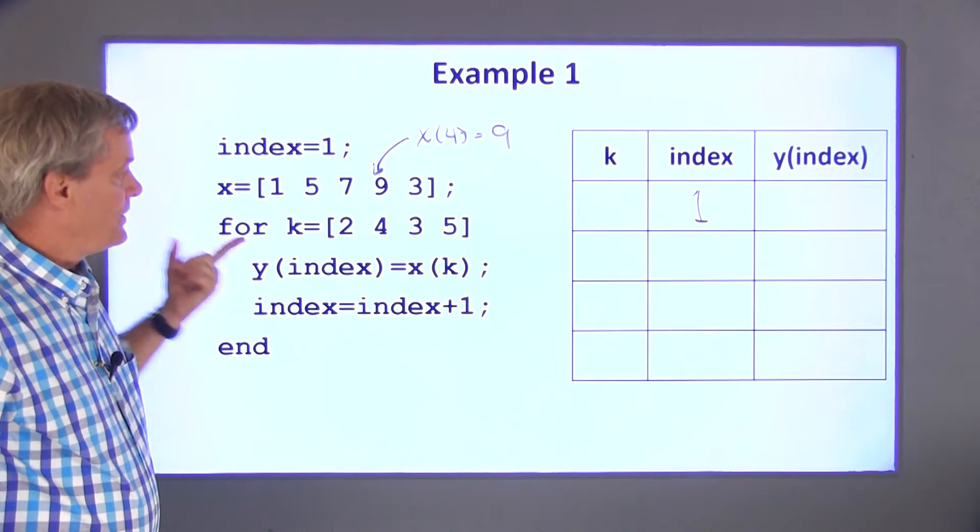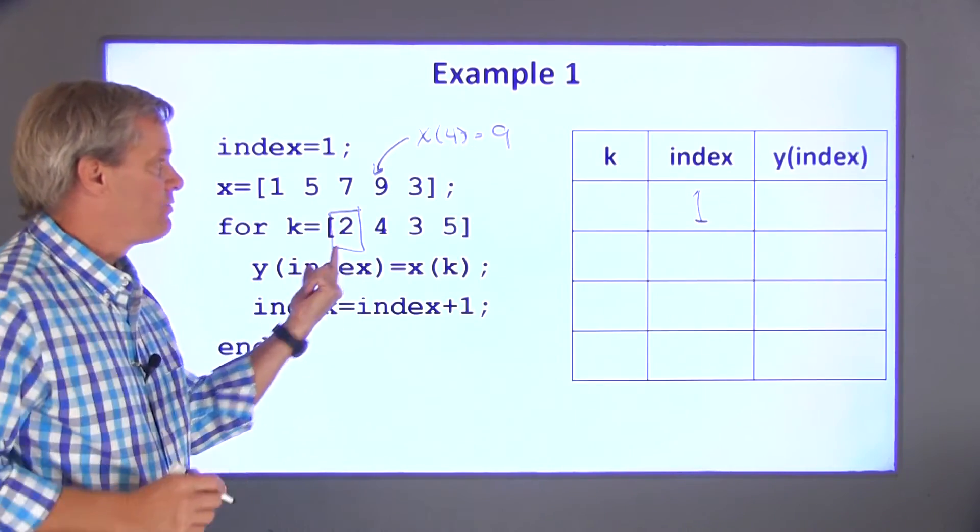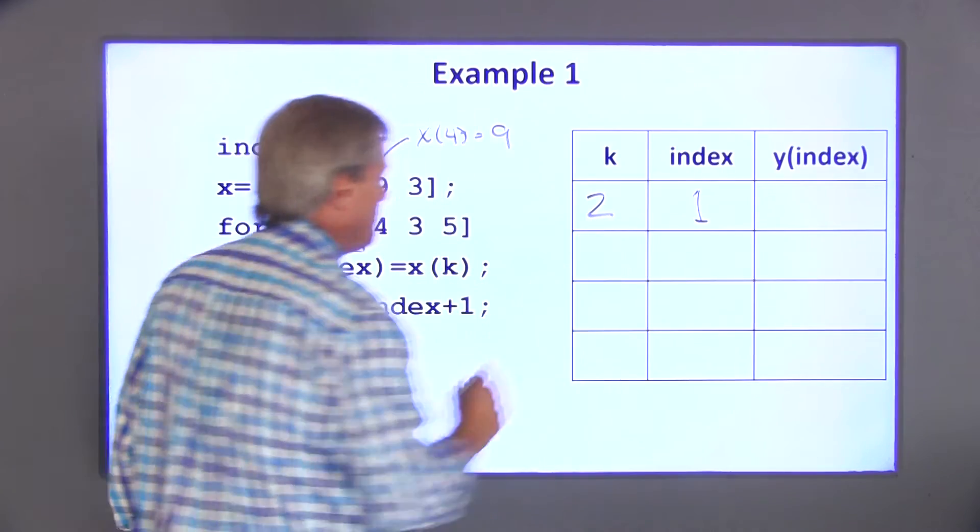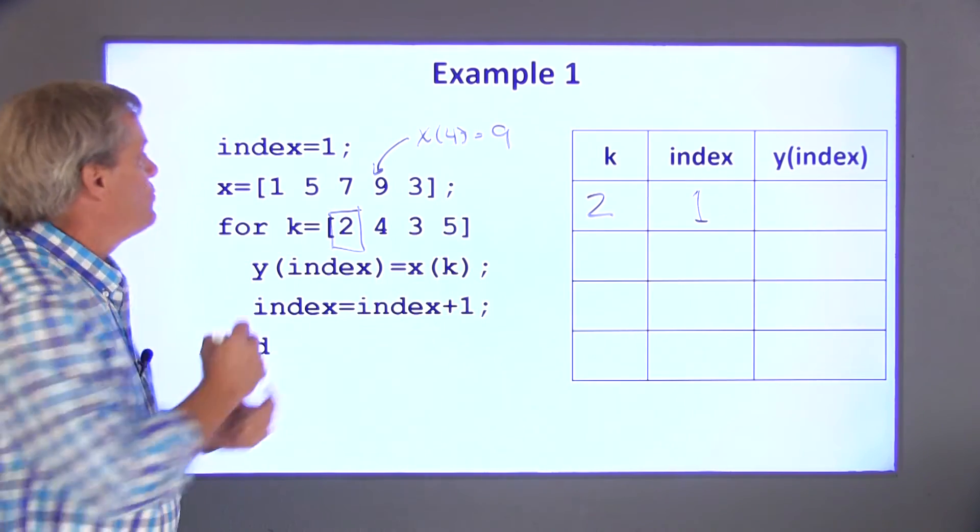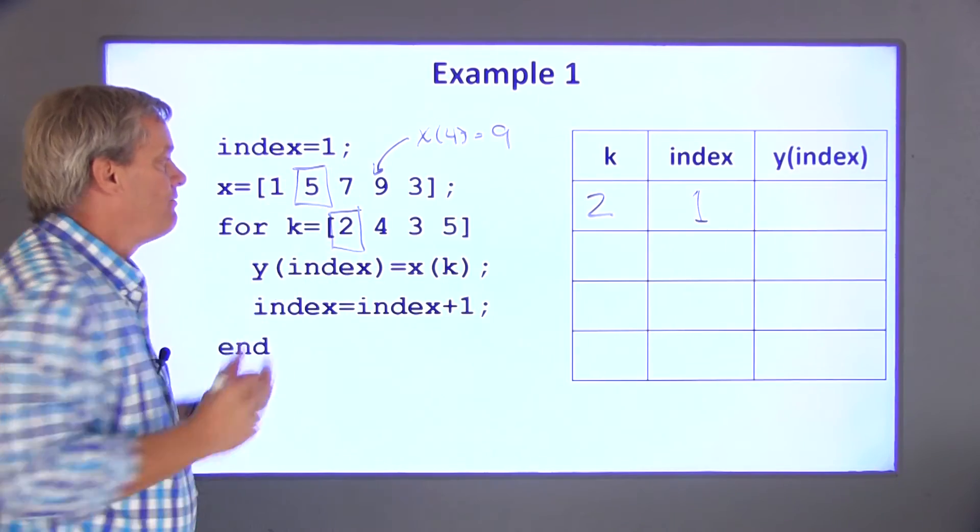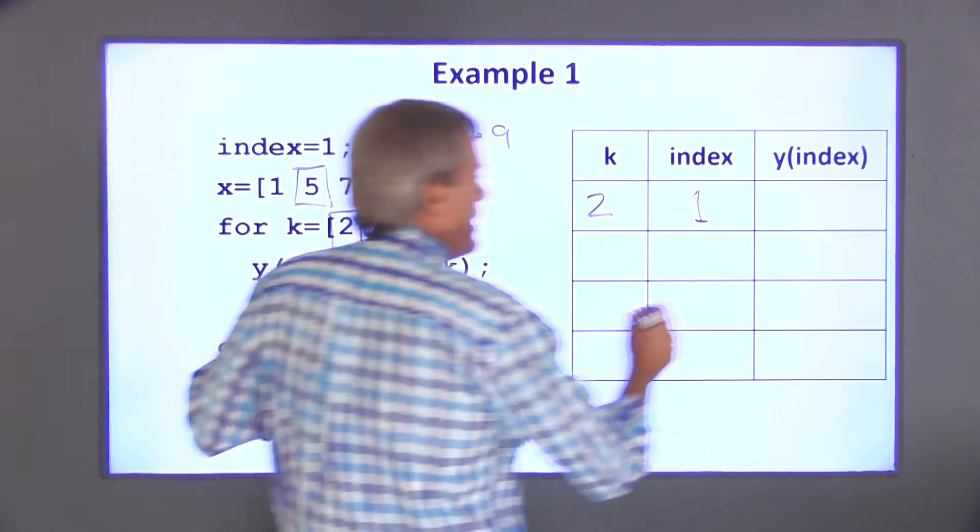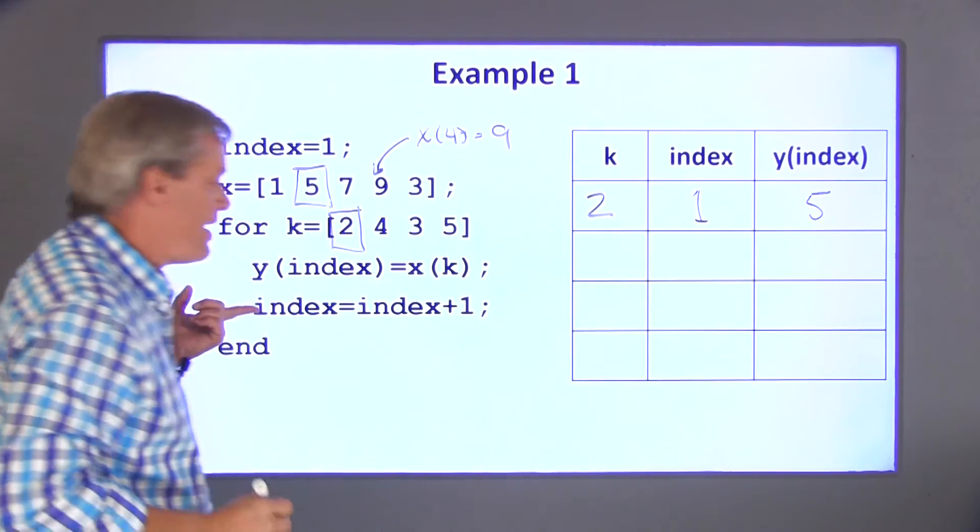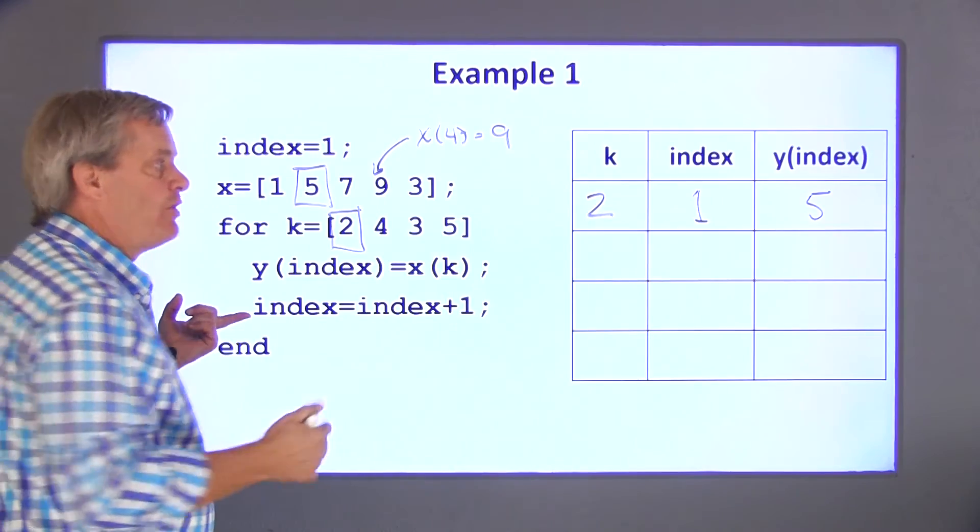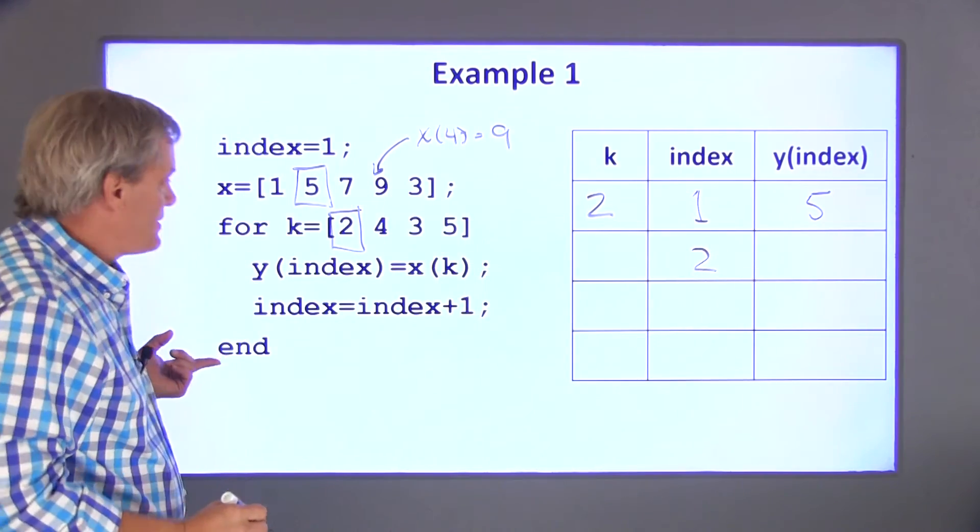So now we enter the for loop. The first time through the loop, k takes on the first value in this array. So k is equal to 2 the first time through the loop. x of k is x of 2, which is just the second value in this array. That's set equal to y of index. So y of index is 5. After that, I add 1 to index. 1 plus 1 is 2. I hit the end statement.